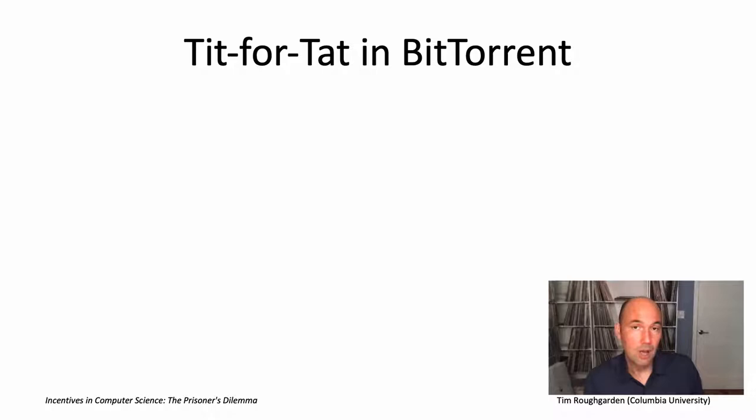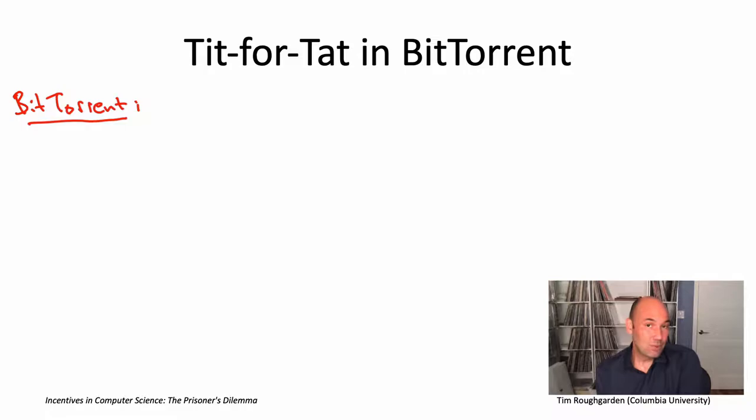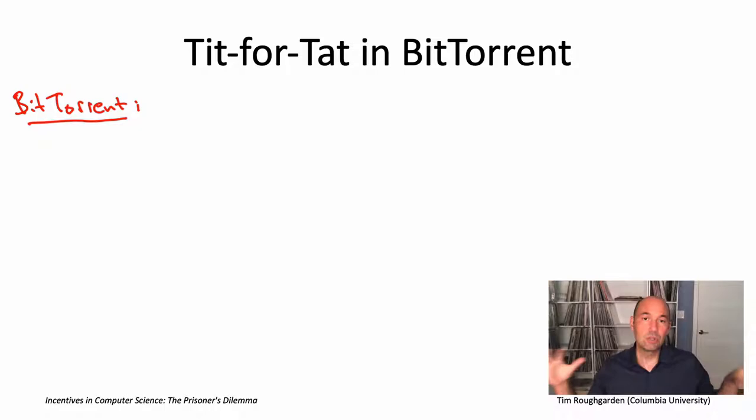The problem solved by BitTorrent is that of the distribution of very large files. Sometimes to get a really large file, you just go to some big company with a centralized server and download it from there. BitTorrent is a peer-to-peer based solution for file distribution — there's no centralized server that everybody downloads from. Rather, commodity machines help each other acquire the file.